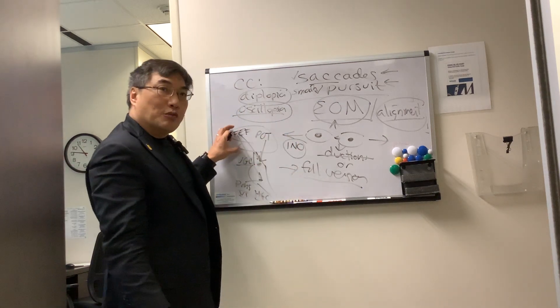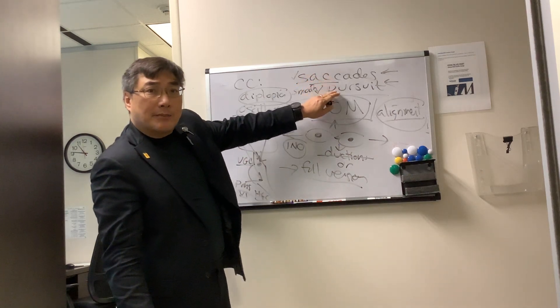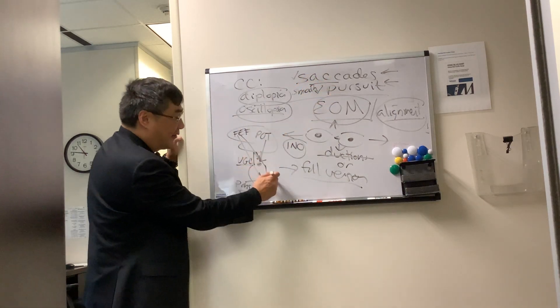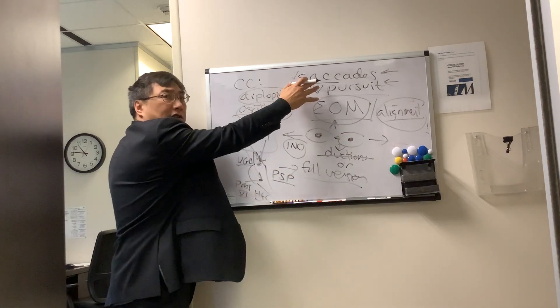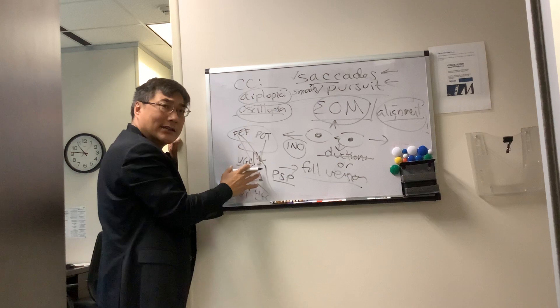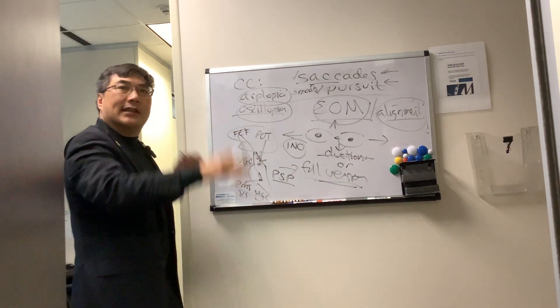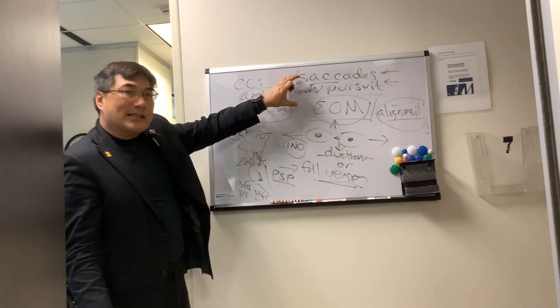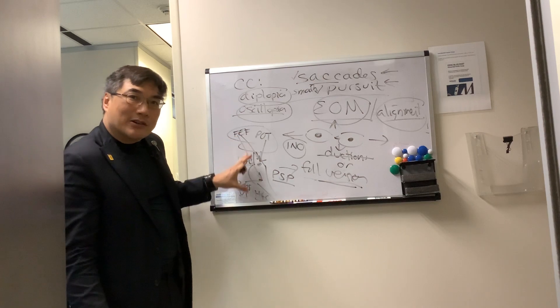Or if you have a supranuclear palsy, we can test the saccade and pursuit because a degenerative disease like progressive supranuclear palsy is going to be much more sensitive to saccade and pursuit abnormality initially. By the time they can't look down with the version, that's like end stage. So we're going to be looking for these early symptoms and early signs that something's wrong with the network.